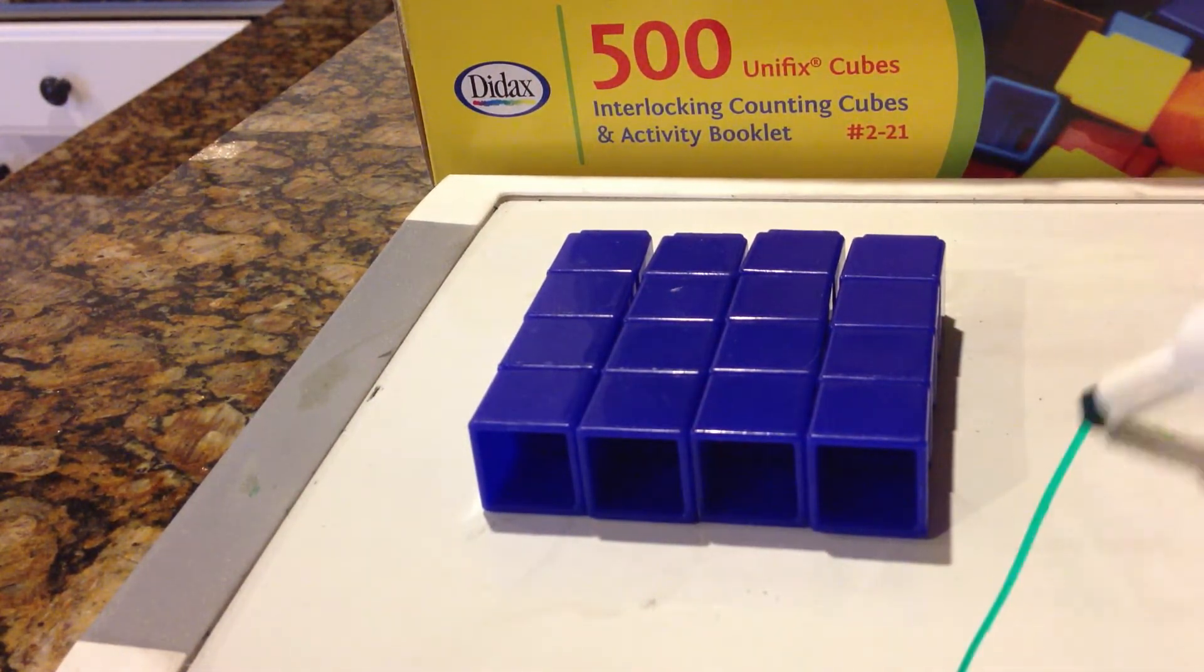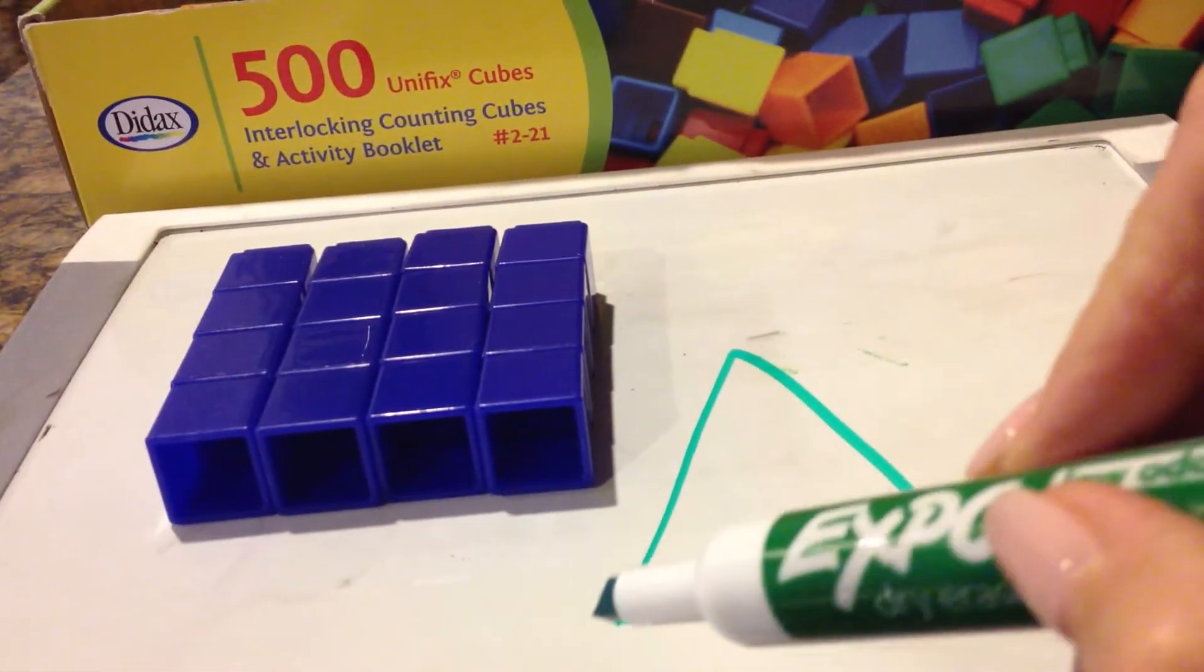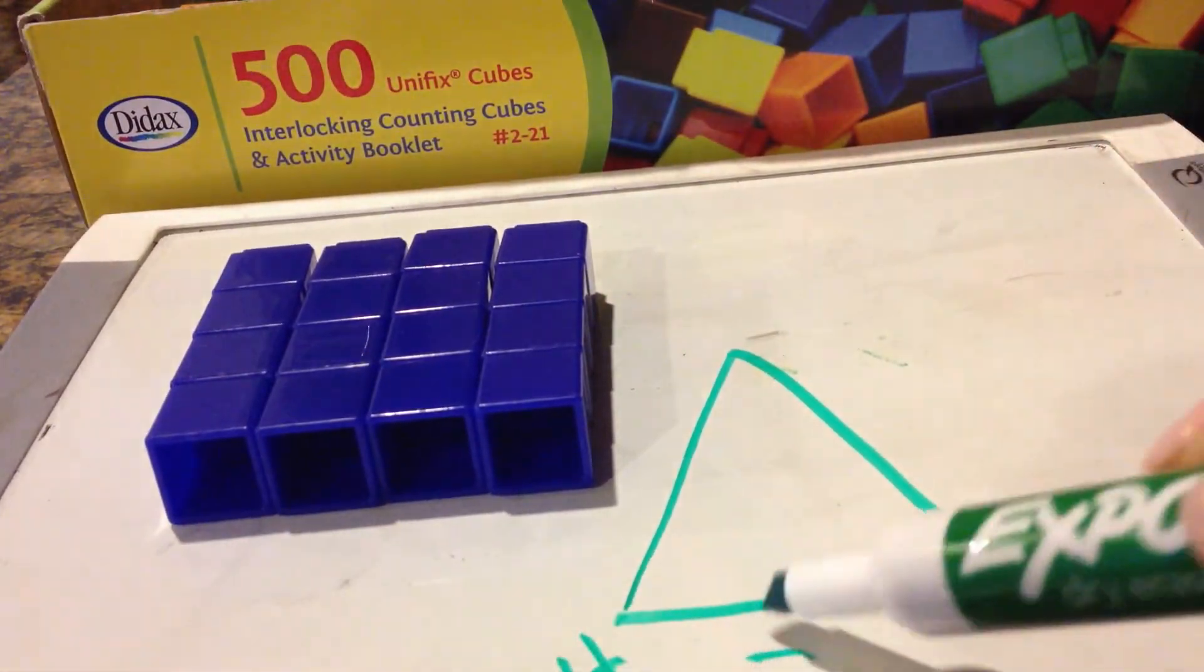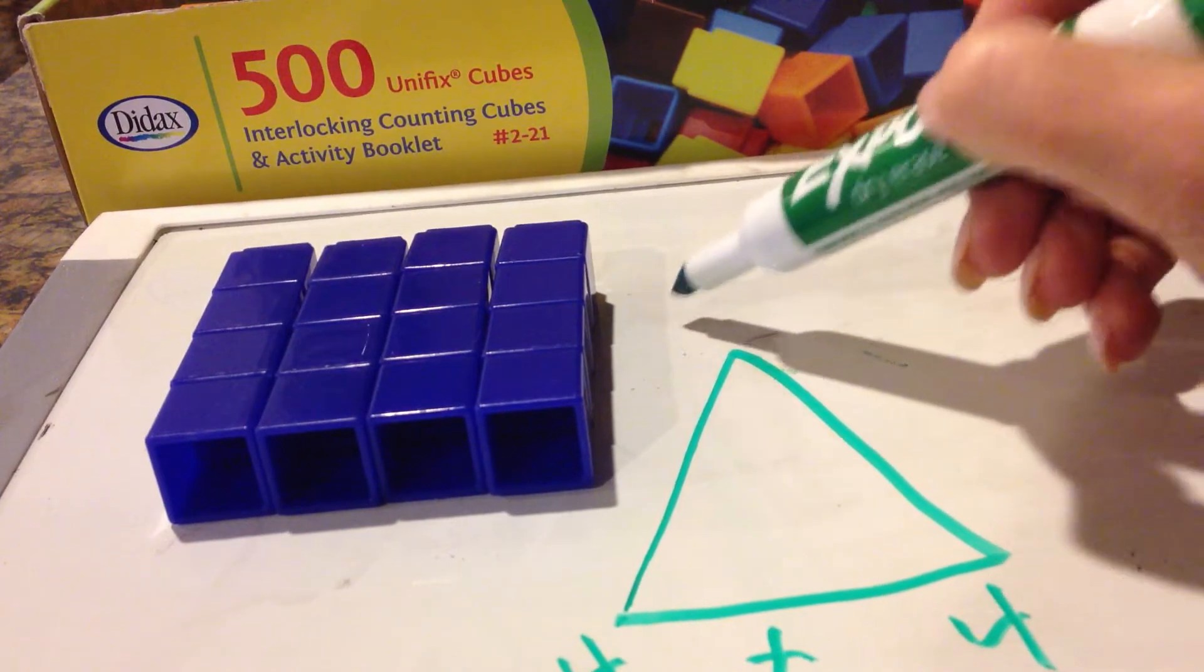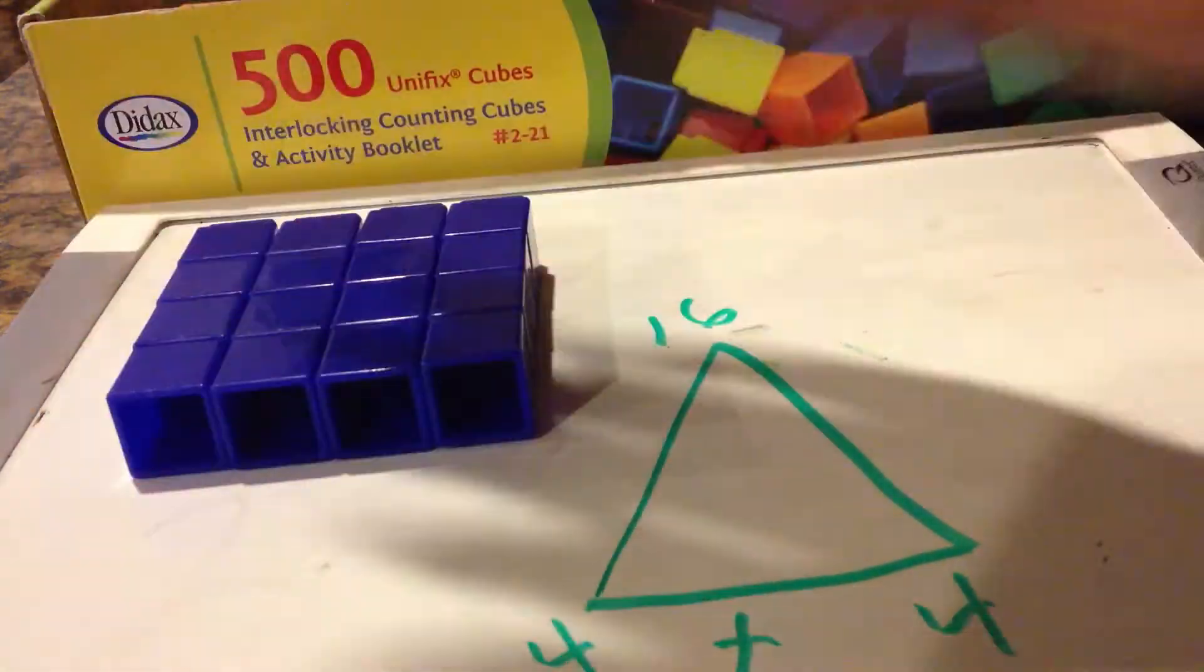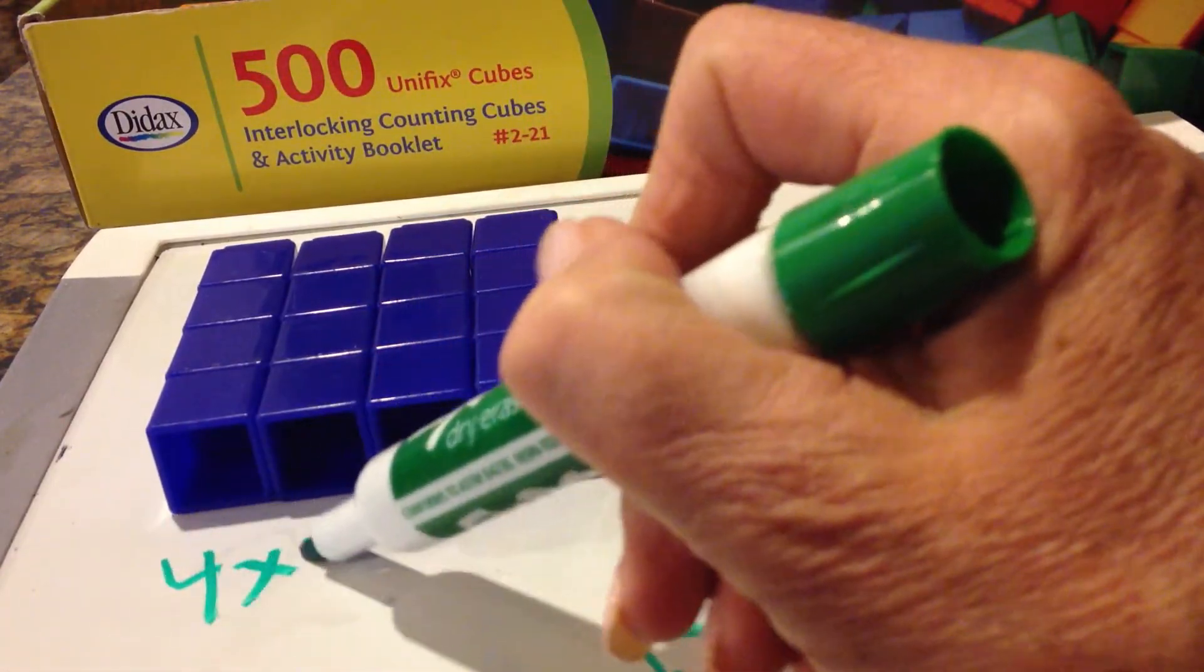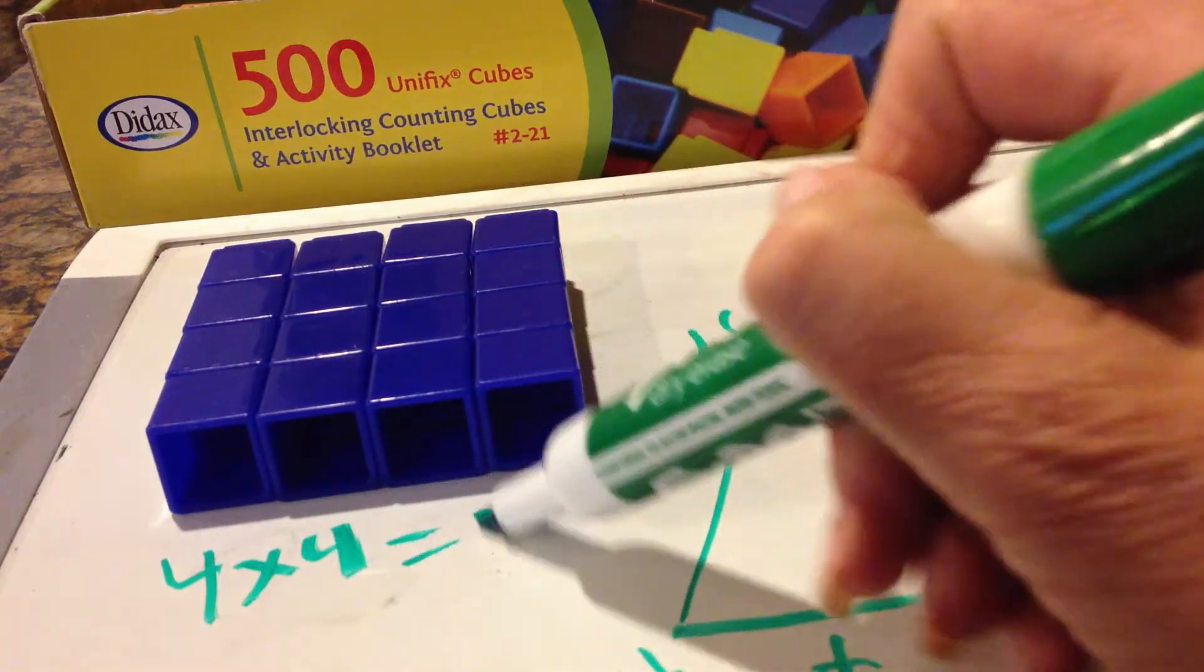So what we have here is 4 times 4. If we draw the fact family as they know it, it looks like 4 times 4 equals 16. But another way to say this actually is 4 times 4 equals 16.